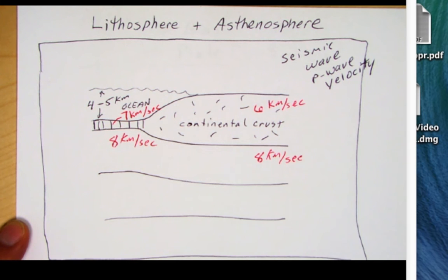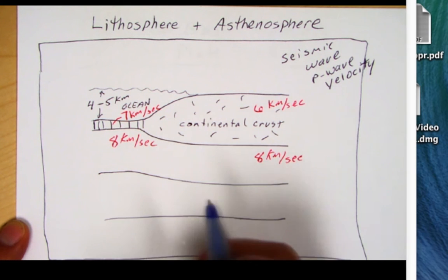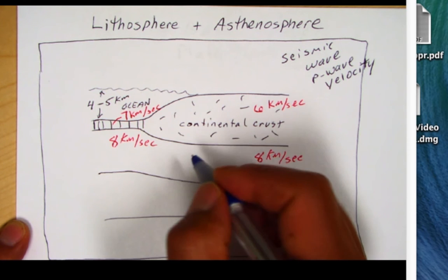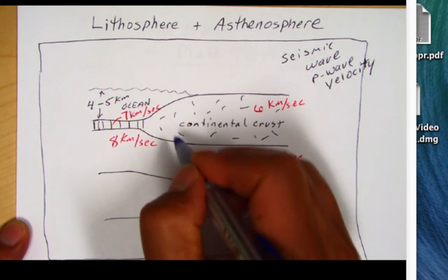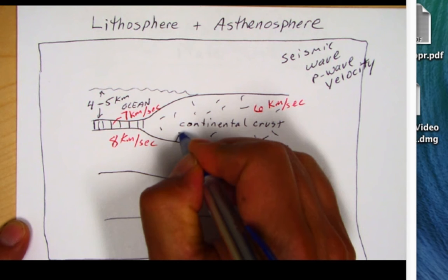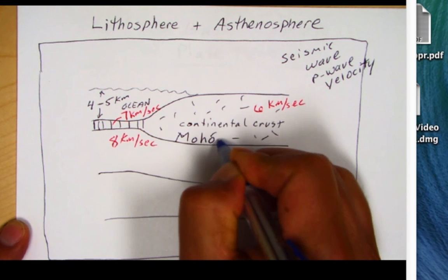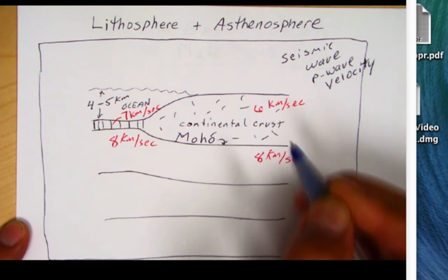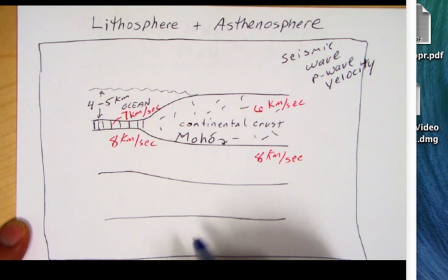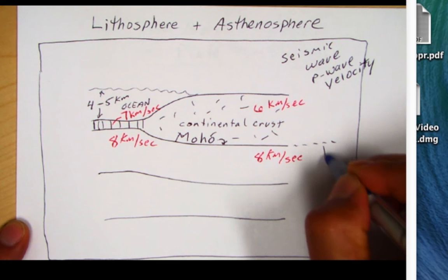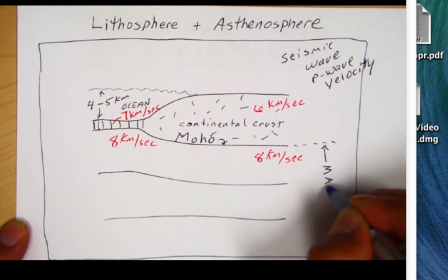This was first discovered by a scientist named Mohorovicic, a Yugoslavian scientist in the early 1900s. And so collectively we abbreviate this. Geologists call this the MOHO. I want you to know that the MOHO, this boundary between crust and mantle. So that means anything down over here going this way is mantle. So this would be the mantle.